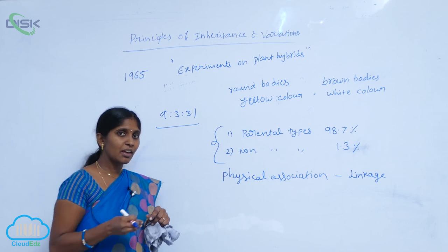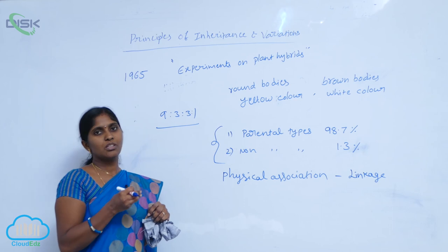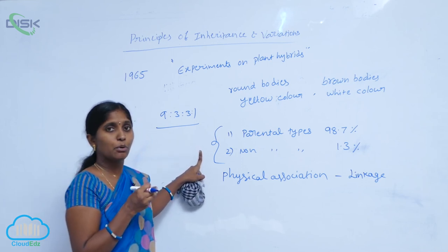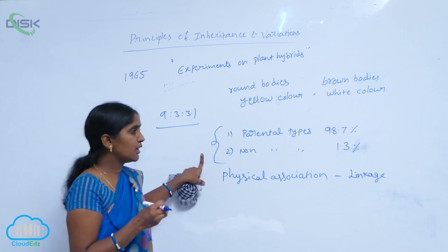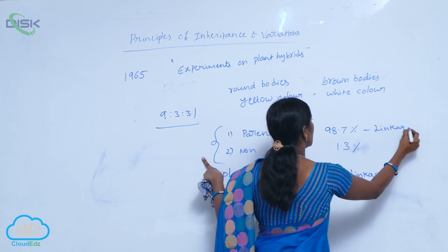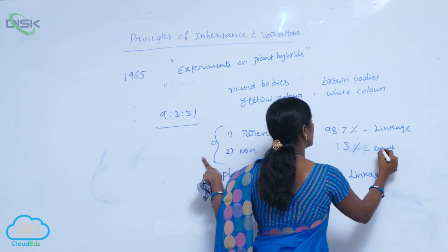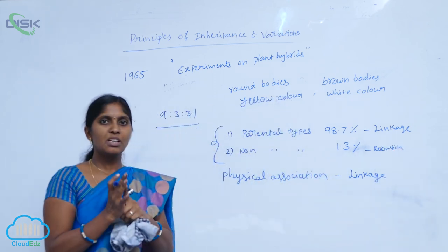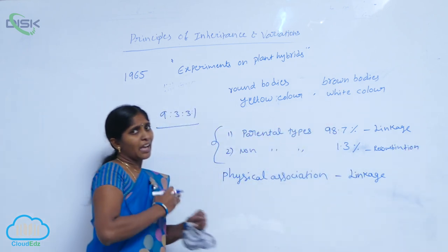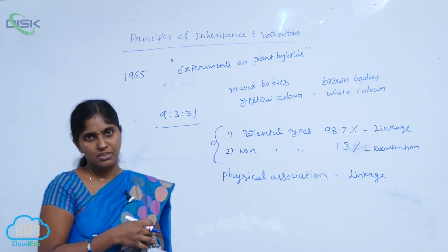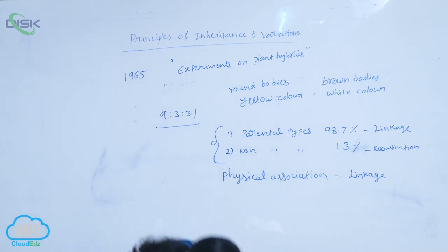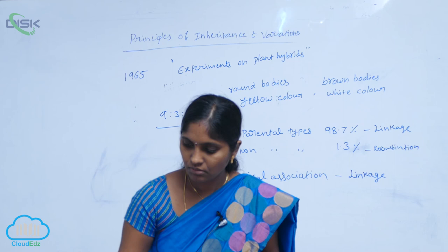When the recombination rate is high, the linkage rate is low. In Morgan's Drosophila experiment, 98.7% were parental type and only 1.3% were non-parental type, meaning linkage was high and recombinants were low. Morgan observed that linkage and recombination have an inverse relationship — a high rate of linkage means a low rate of recombination, and a high rate of recombination means a low rate of linkage.